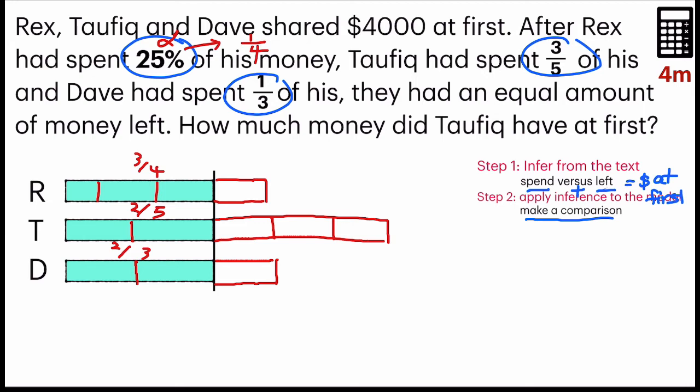And we're going to include the portion that says that the amount of money before that they have was $4,000. Now, step 3. We are going to find 1 unit from the model using unitary method. But here is the problem. Before we take $4,000 divided by the parts, you might notice that this part is not equal to this. But this is equal to this. So how do we make sure that every single part in the model is equal before we can do a division?